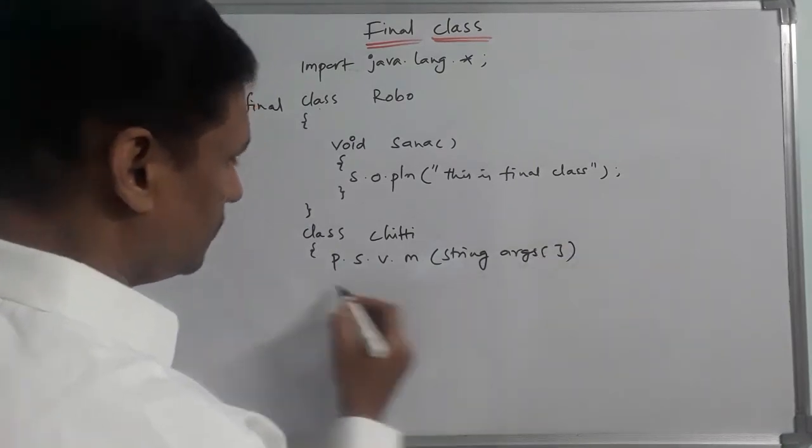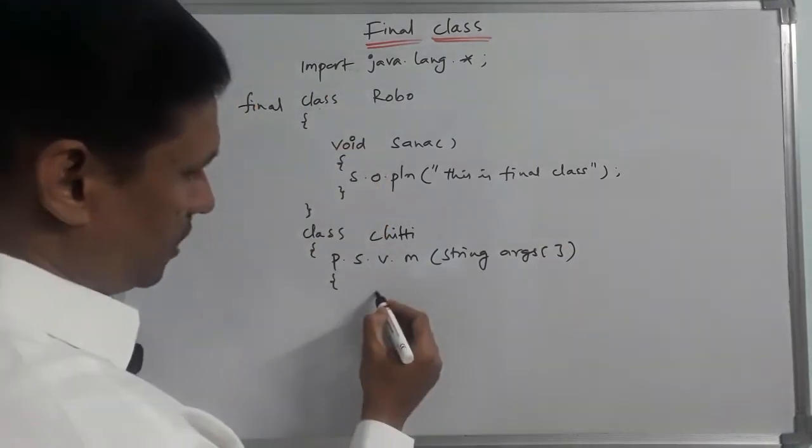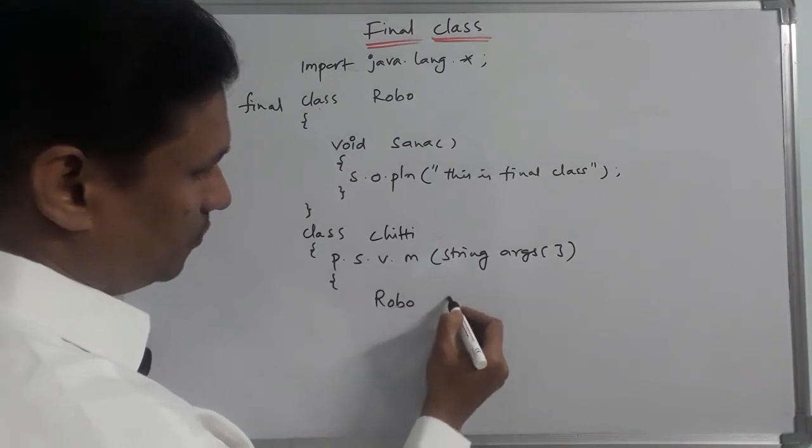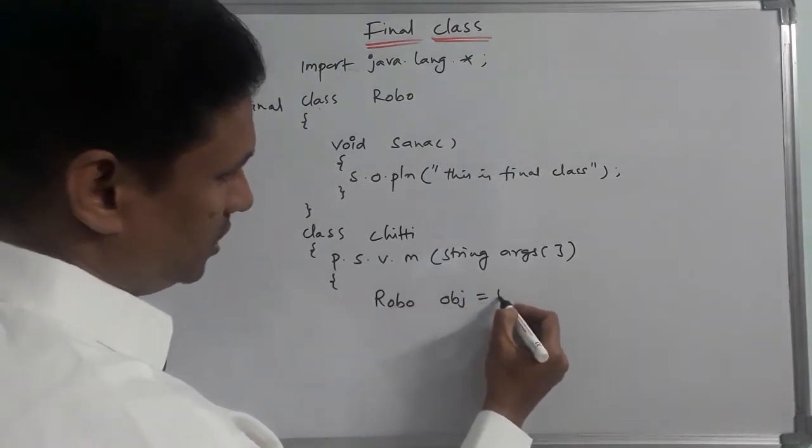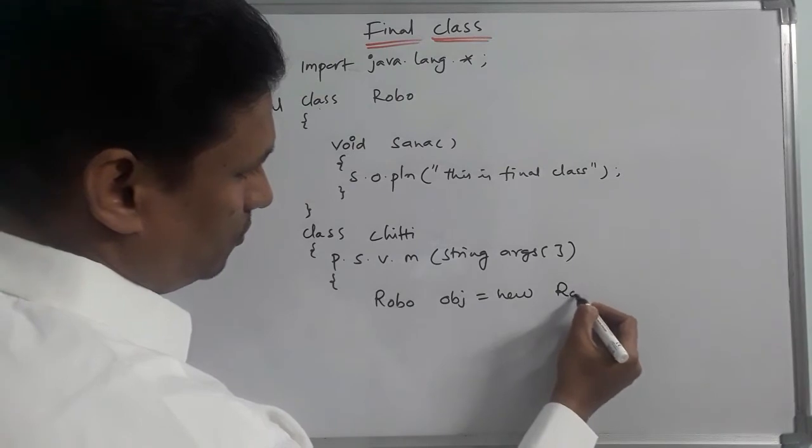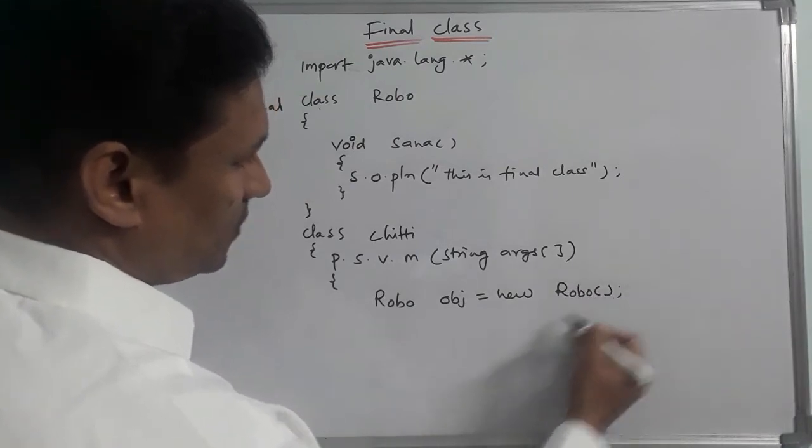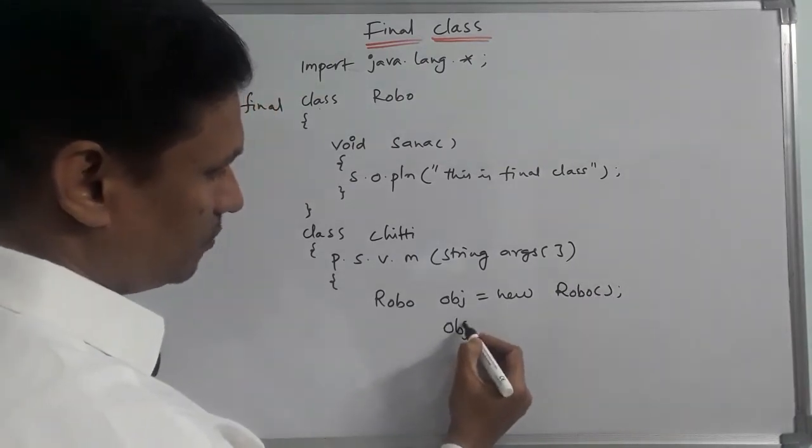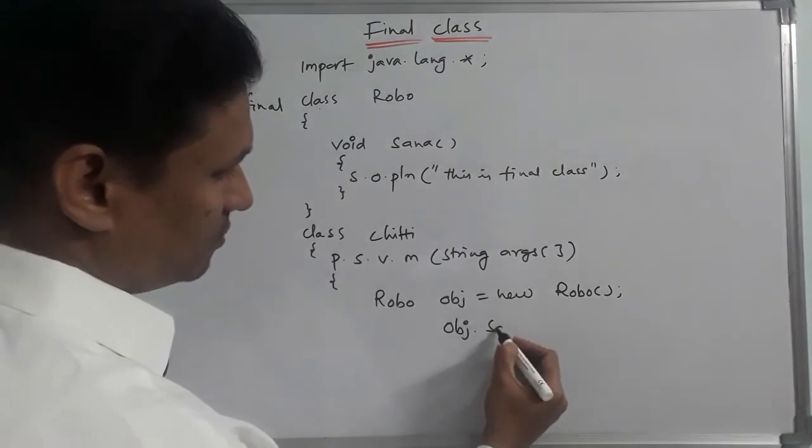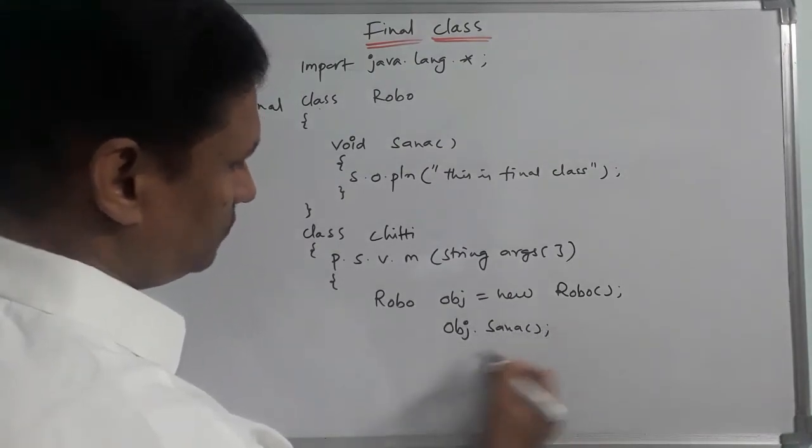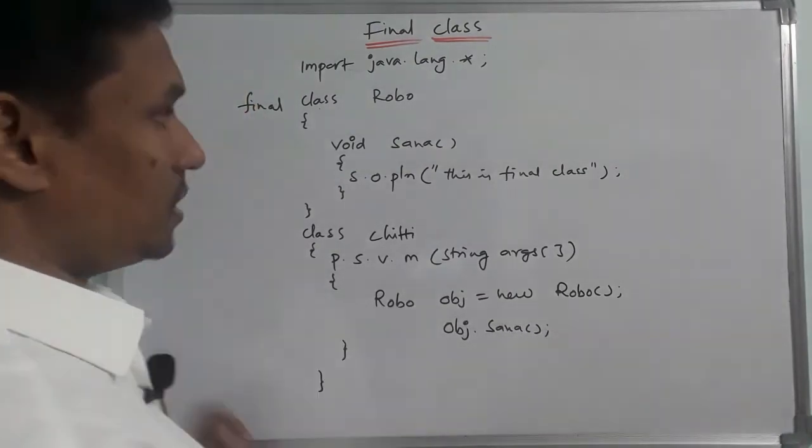This class is another class. This class is a final class, for example obj equal to new Robo with respect to object name to function name we call it for example. So main class.